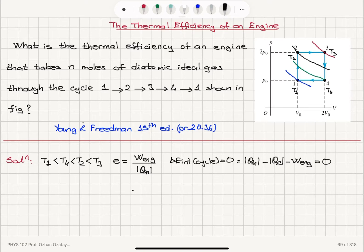Work done by the engine is the difference QH minus QC. We can see that the thermal efficiency of this engine would be QH minus QC divided by QH, which would be equal to 1 minus QC over QH.